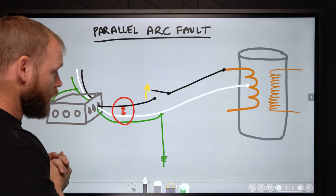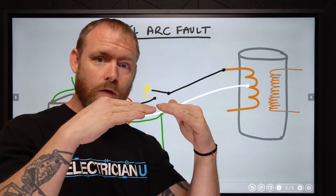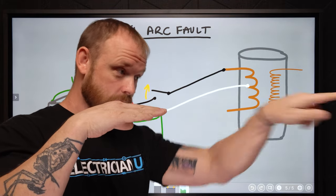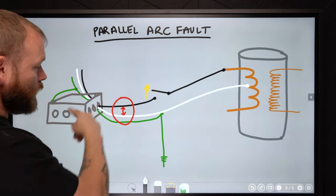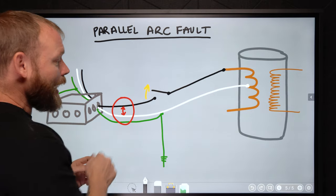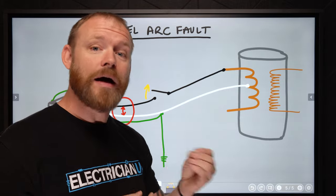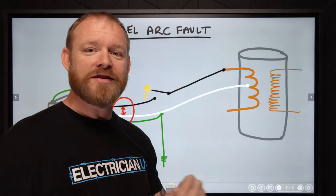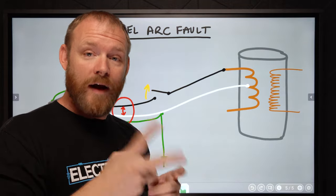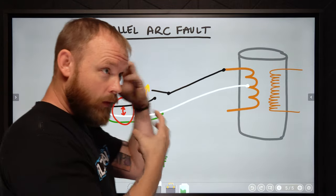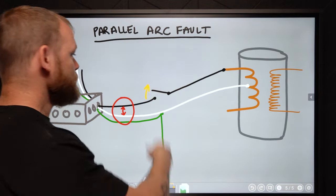A parallel arc fault is similar but occurs between two parallel conductors — for instance, arcing between a hot and a neutral. Combination arc fault devices detect both series and parallel arc faults — 'combination' doesn't mean ground faults and arc faults, it means both types of arcs. The breaker's electronics identify the signature of a parallel arc and open the circuit accordingly.